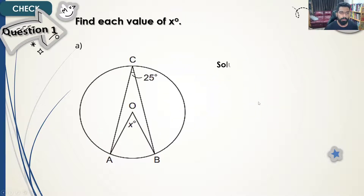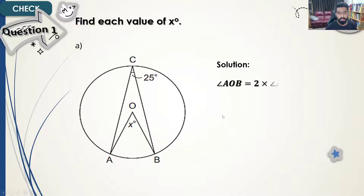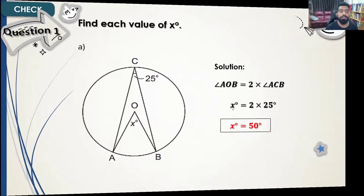For question 1, we have angle AOB as the central angle and angle ACB as the inscribed angle. Since the central angle is twice the inscribed angle, angle x equals 2 times 25 degrees, which is 50 degrees. Pretty straightforward.